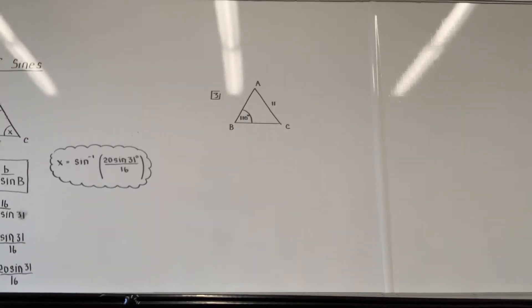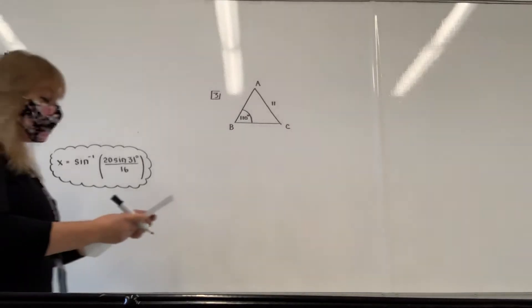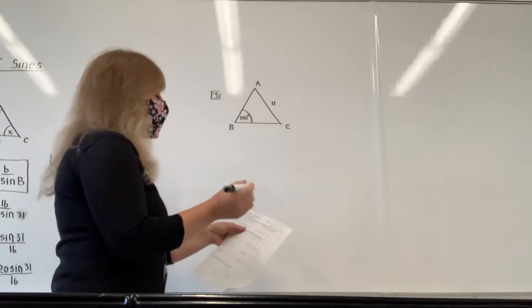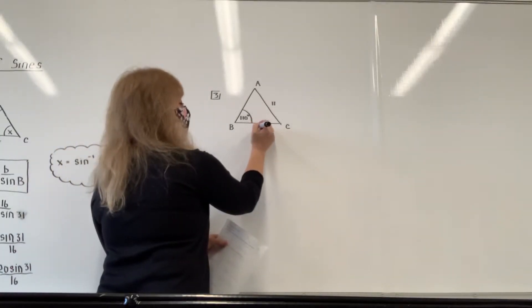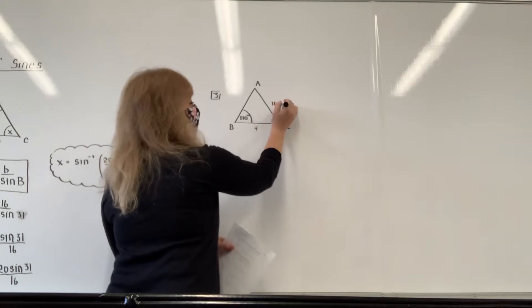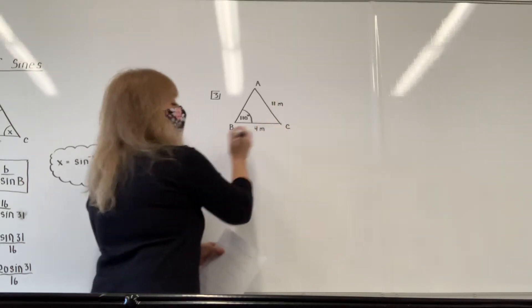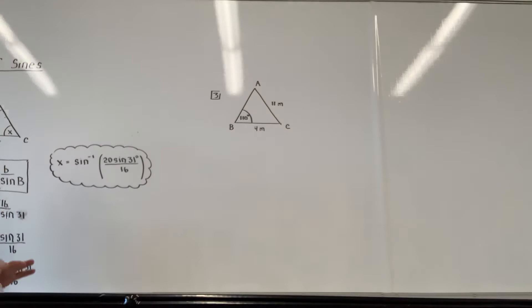Okay, so for problem number three, I have lowercase a is 4 meters. So lowercase a is opposite capital A. I'm going to no longer put the units in, even though the units should be the same no matter what.